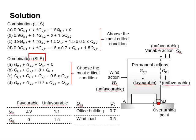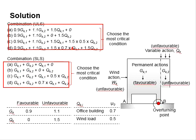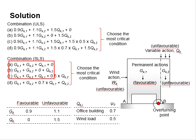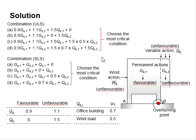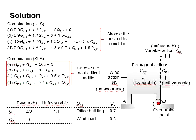For the serviceability limit state, the combinations are identical to those at the ultimate limit state. The difference is that all factors of safety for the actions are taken as 1.0, and psi_0 is only applied to the accompanying variable actions. Out of the four combinations, the most critical condition is selected.